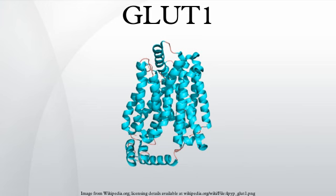GLUT1 is widely distributed in fetal tissues. In the adult, it is expressed at highest levels in erythrocytes and also in the endothelial cells of barrier tissues such as the blood-brain barrier.